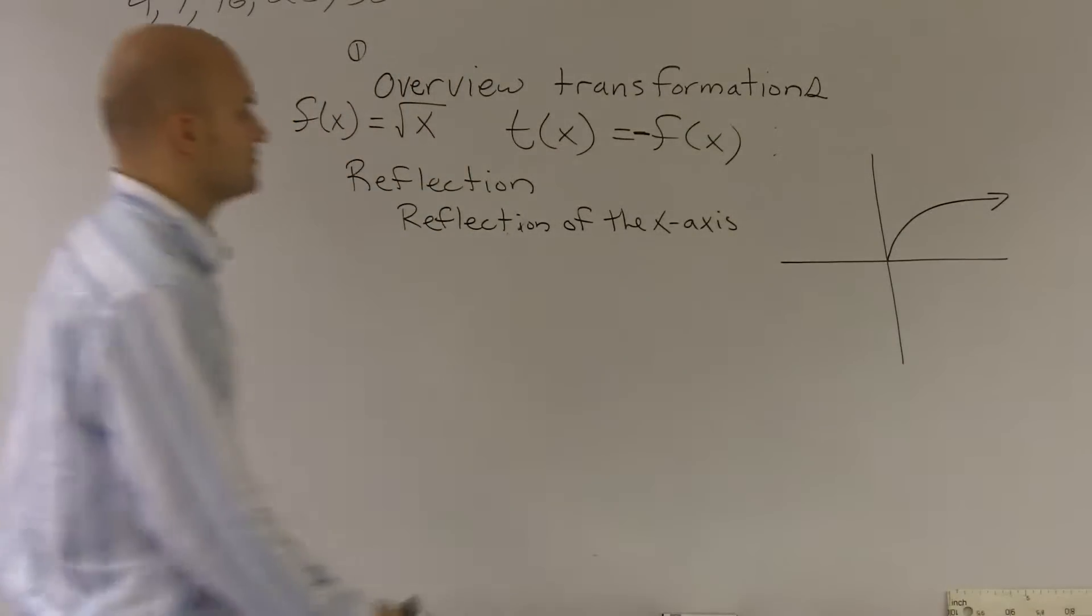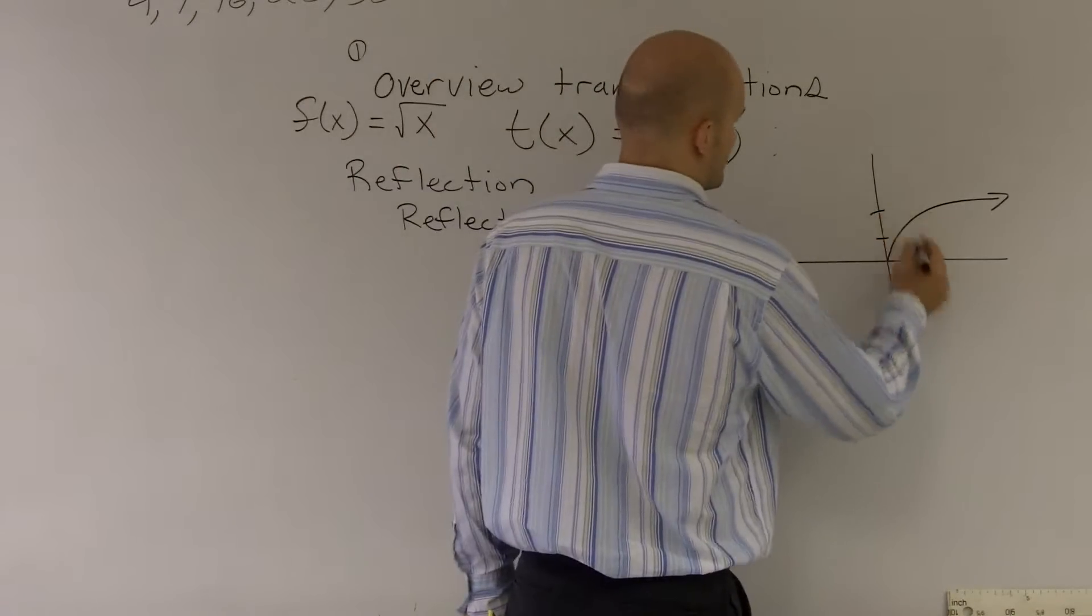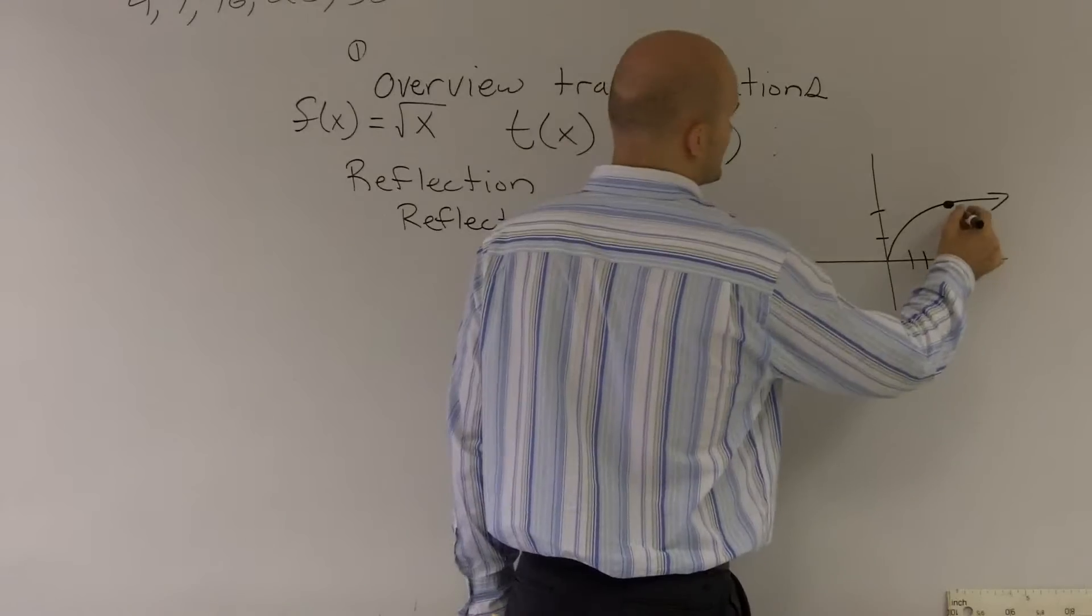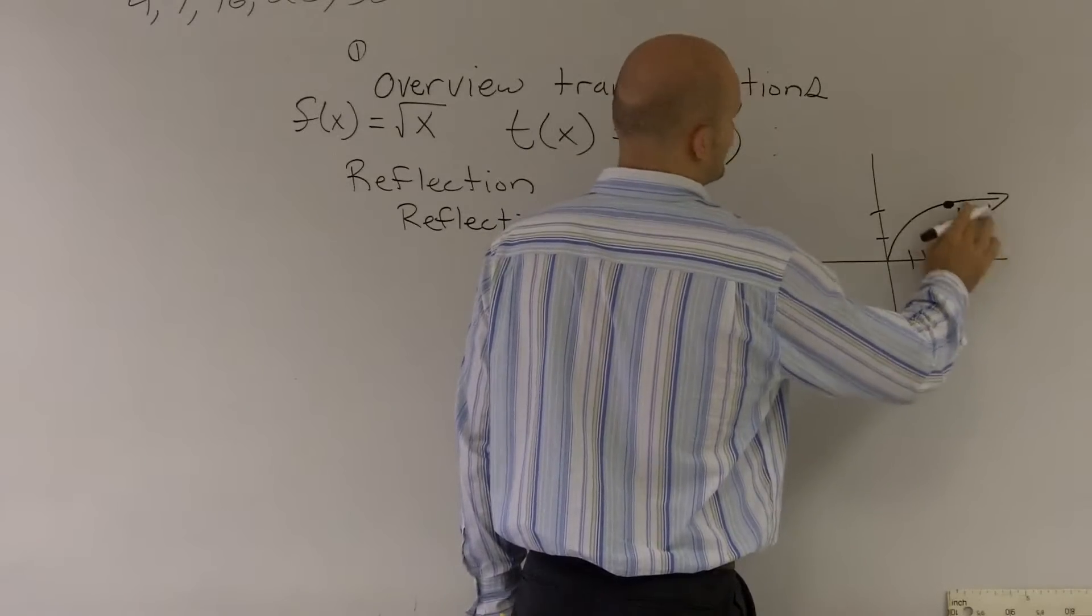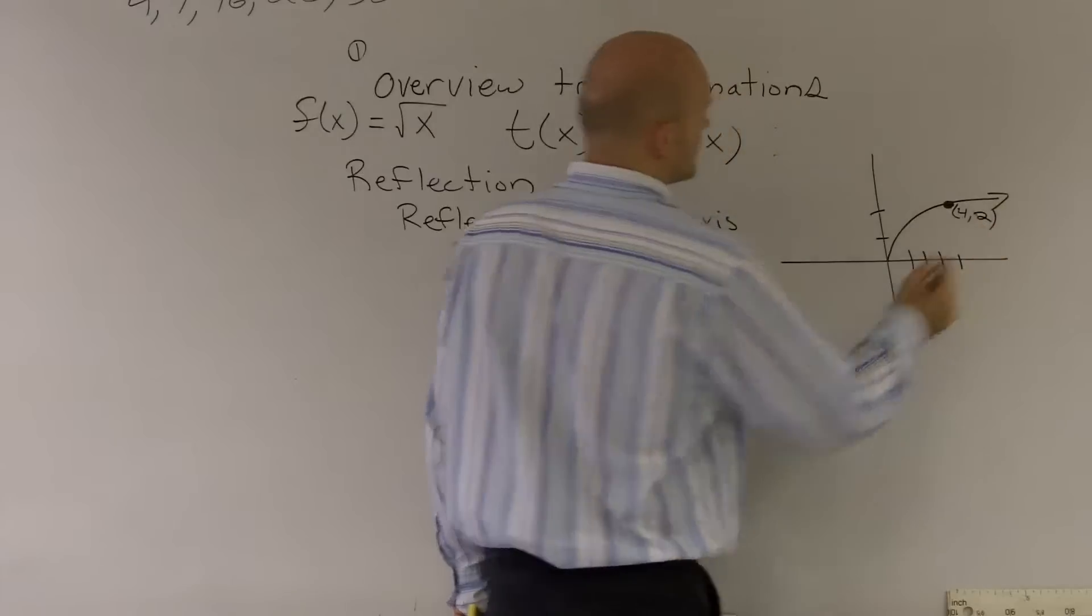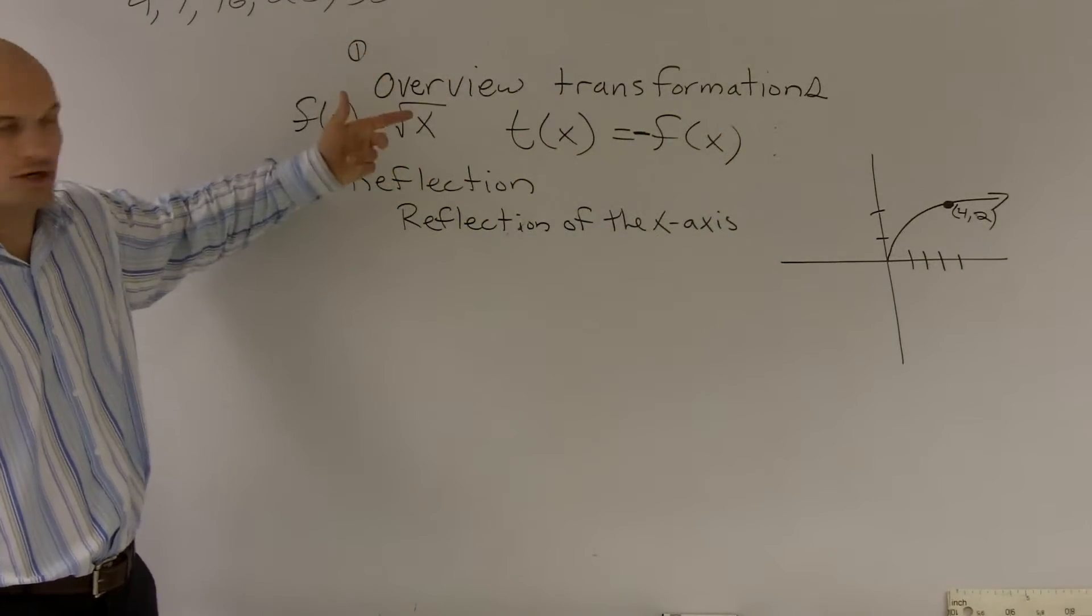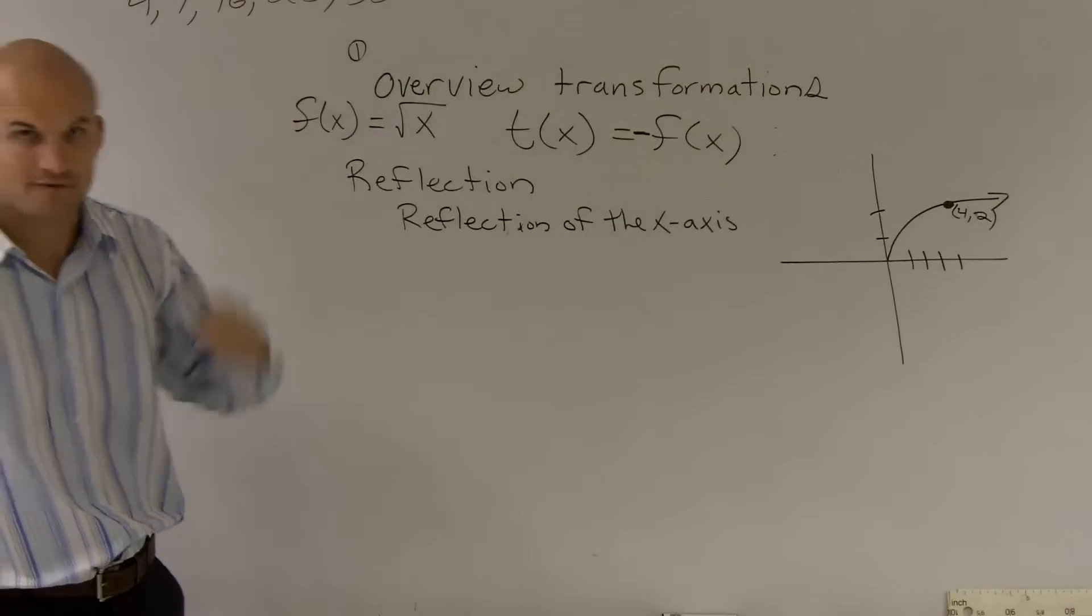Now, let's say, 4 comma 2. This is a point 4 comma 2. So we know that point's on the graph. The square root of 4 is going to be 2. We know that is on the graph. We got it.